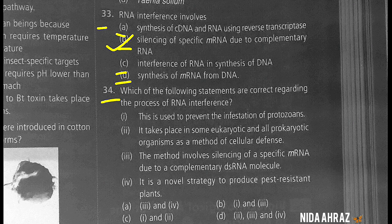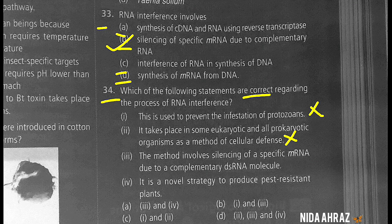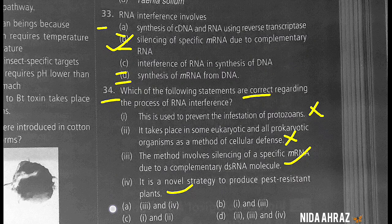Regarding RNA interference: statement one — used to prevent infestation of protozoans — is incorrect. Statement two — takes place in some eukaryotic and all prokaryotic organisms — is incorrect. Statement three — involves silencing of specific mRNA due to complementary dsRNA — is correct. Statement four — novel strategy to produce pest resistant plants — is correct. So option A is the correct choice.